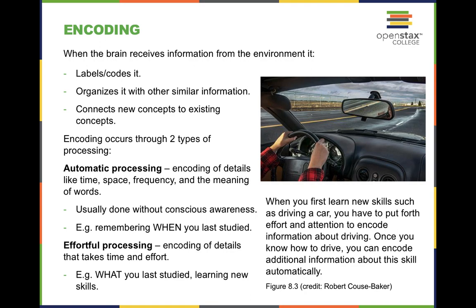We have two types of processing. Automatic processing includes encoding of details like time, space, frequency, and the meaning of words. Remembering when you last studied is a lot easier than remembering what you last studied, which is what's known as effortful processing. When I last studied? Well, I studied last night. What did you study? Then you have to include effortful processing — it's hard to remember all the details, at least harder than with automatic processing.